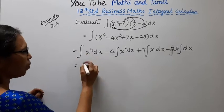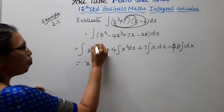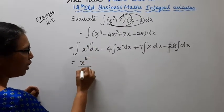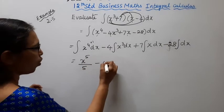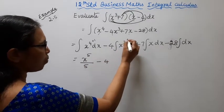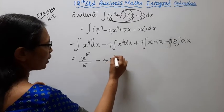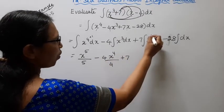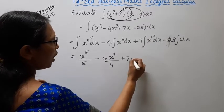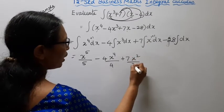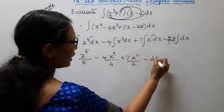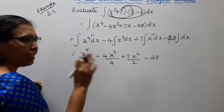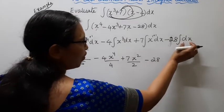Integrating each term using the power rule: x power 4 plus 1 gives x power 5 by 5, minus 4 times x power 3 plus 1 gives x power 4 by 4, plus 7 times x power 1 plus 1 gives x power 2 by 2, minus 28 times x, plus c.